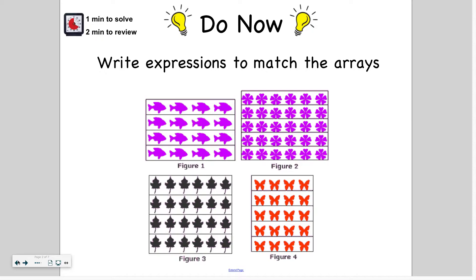Alright, let's go ahead and write our expressions. Remember, expressions are just equations without the equal symbol or the answer. So you're just writing the factors in this case. For this first one, figure one with the purple fish, there are four groups. So four times and there are four in each group, four times four.